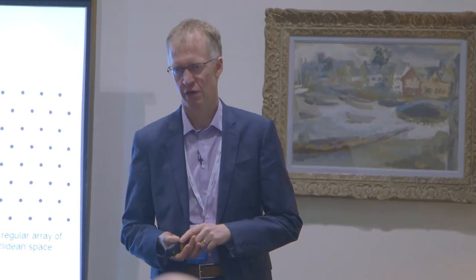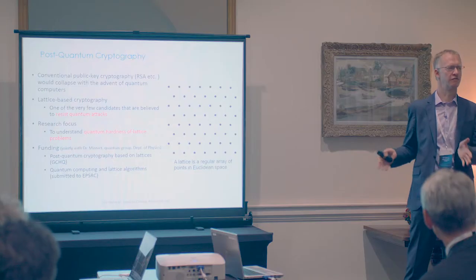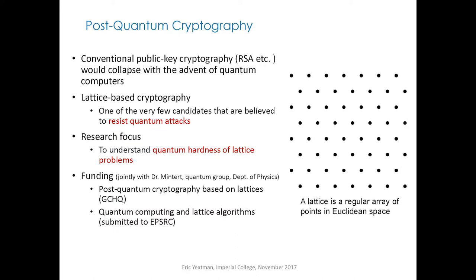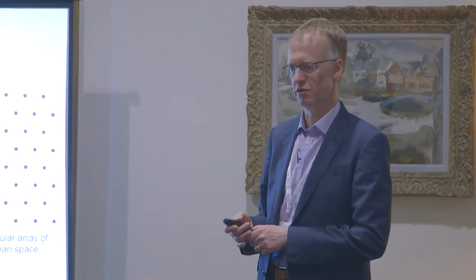We're starting to see quantum computing capabilities becoming real. One of the things quantum computing is very good at is doing particular kinds of calculations — because of an effective large degree of simultaneity — very, very fast. One of those applications is to break codes. This results in two implications: one is how we can use the capabilities of quantum systems to make new and better coding and cryptography systems, and the other is what we should do with classical systems to limit the speed at which they will be broken by quantum capabilities.